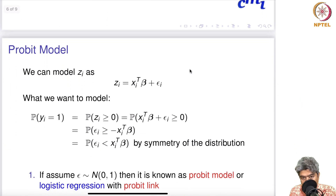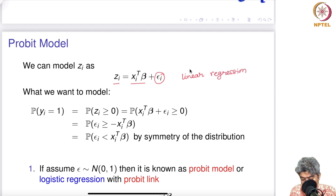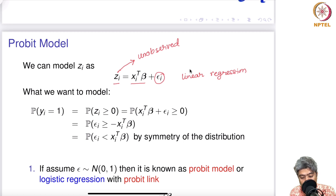I can model zi as: zi = xi^T β + εi. This looks like a linear regression kind of model. However, zi is completely unobserved, so we cannot really fit a linear regression directly.